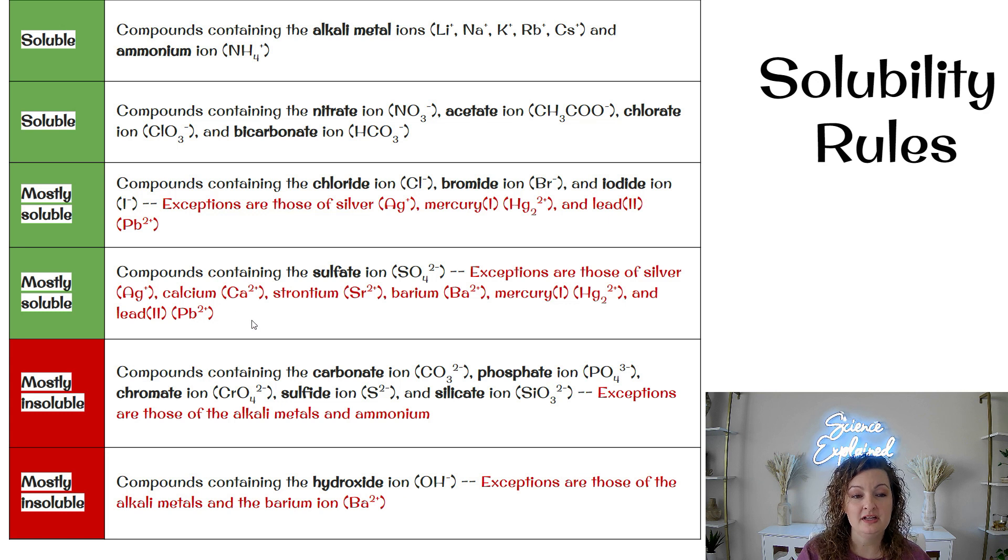All right, the next one, these are going to be mostly soluble. So compounds containing sulfate ions are soluble, except for those that have silver, calcium, strontium, barium, mercury, and lead. So again, just make note that the exceptions are not soluble. So they're insoluble.